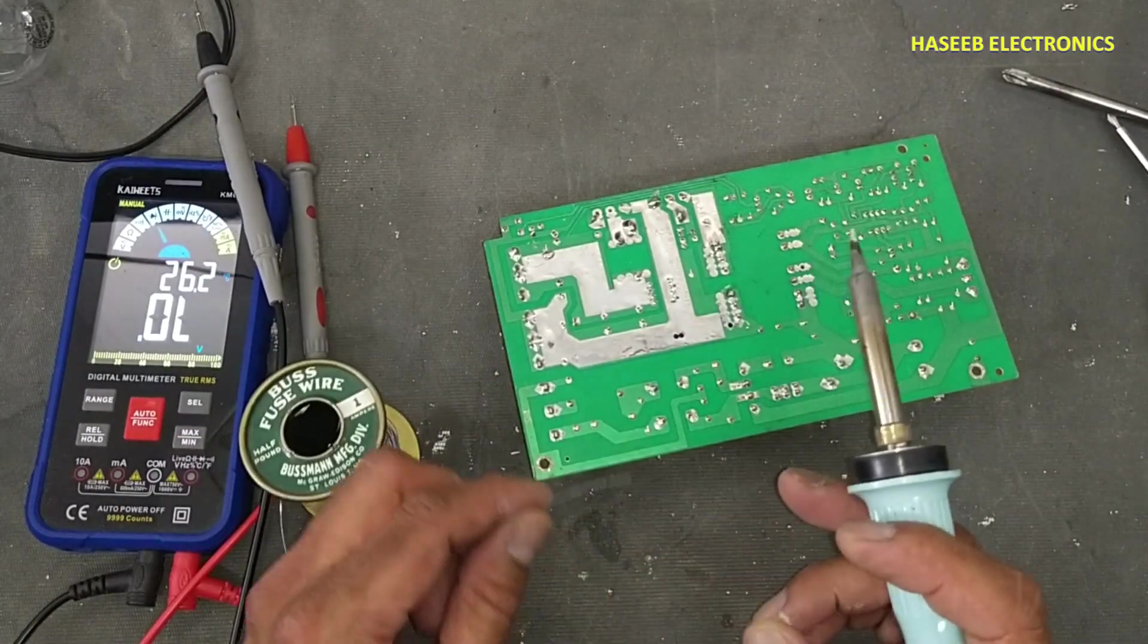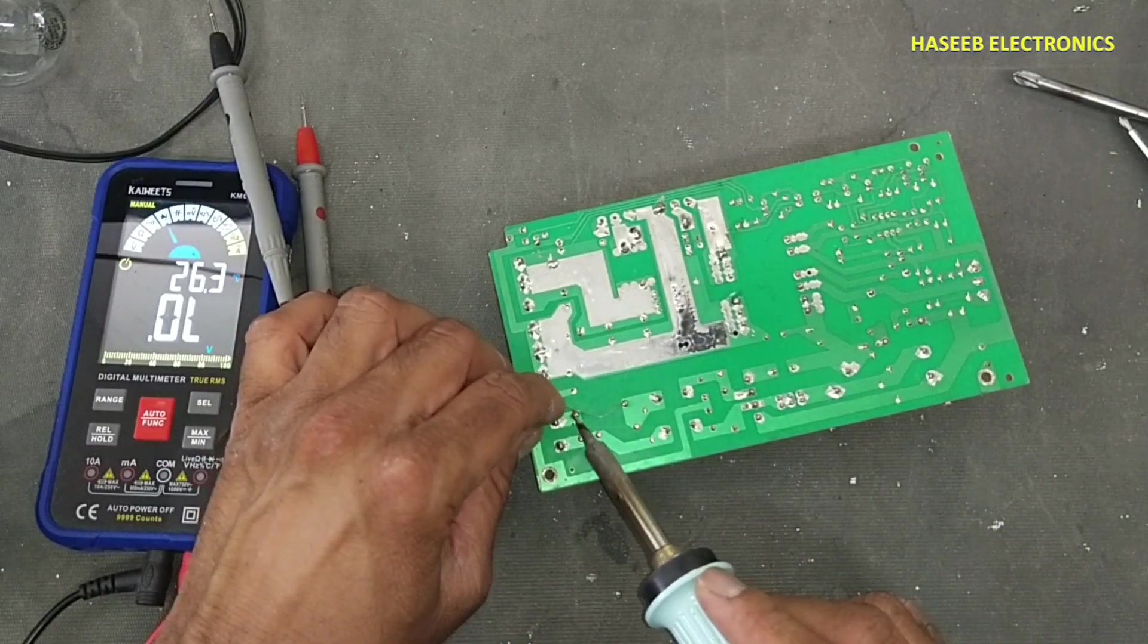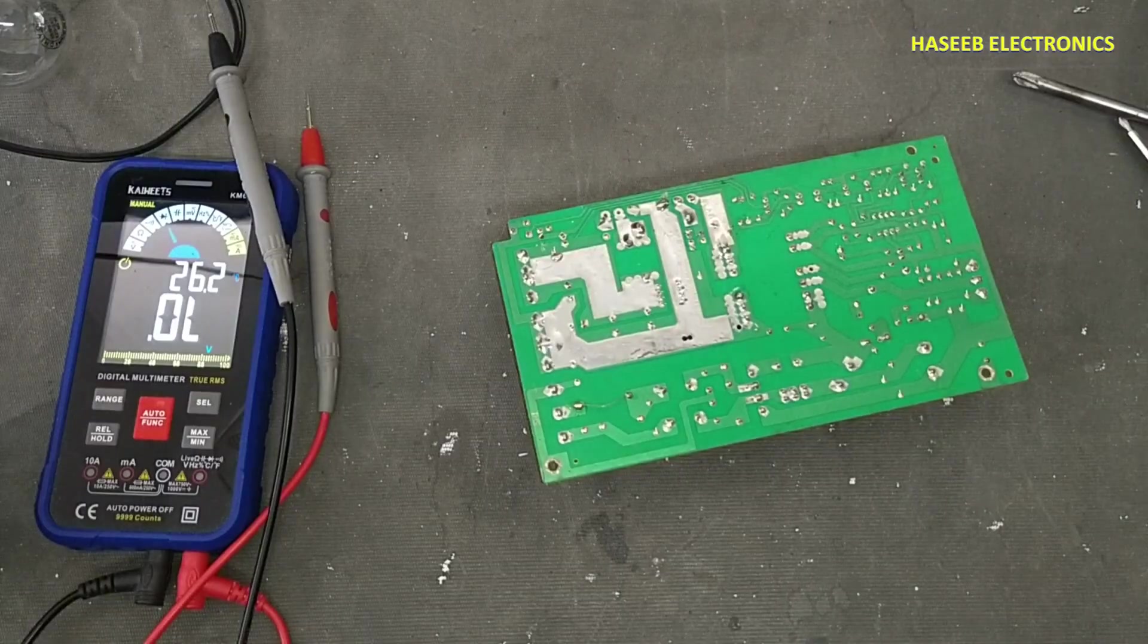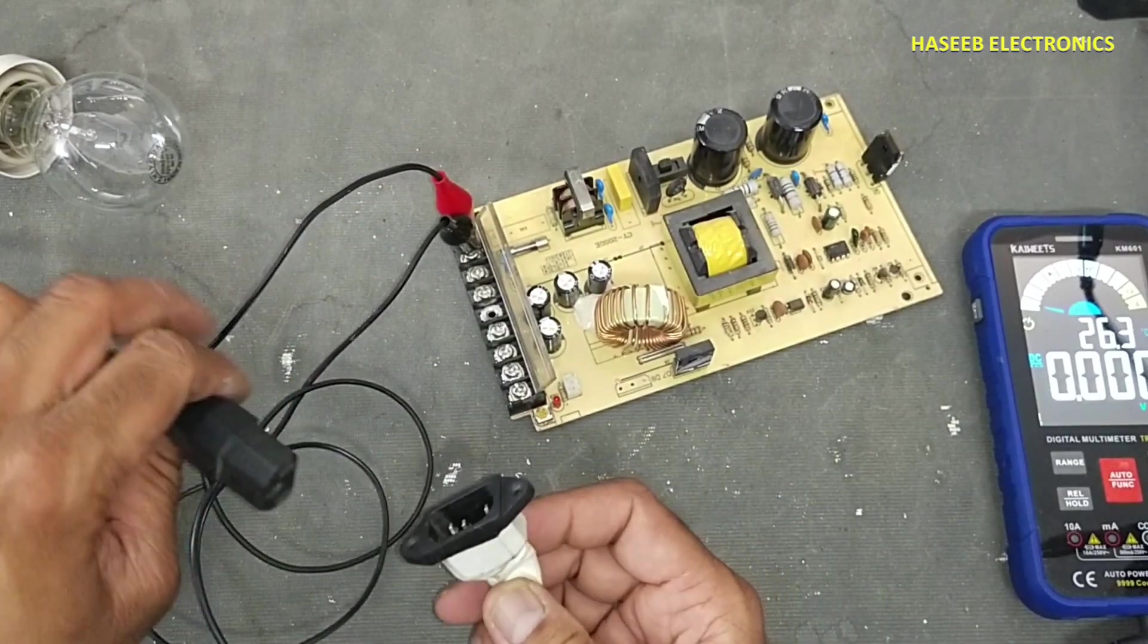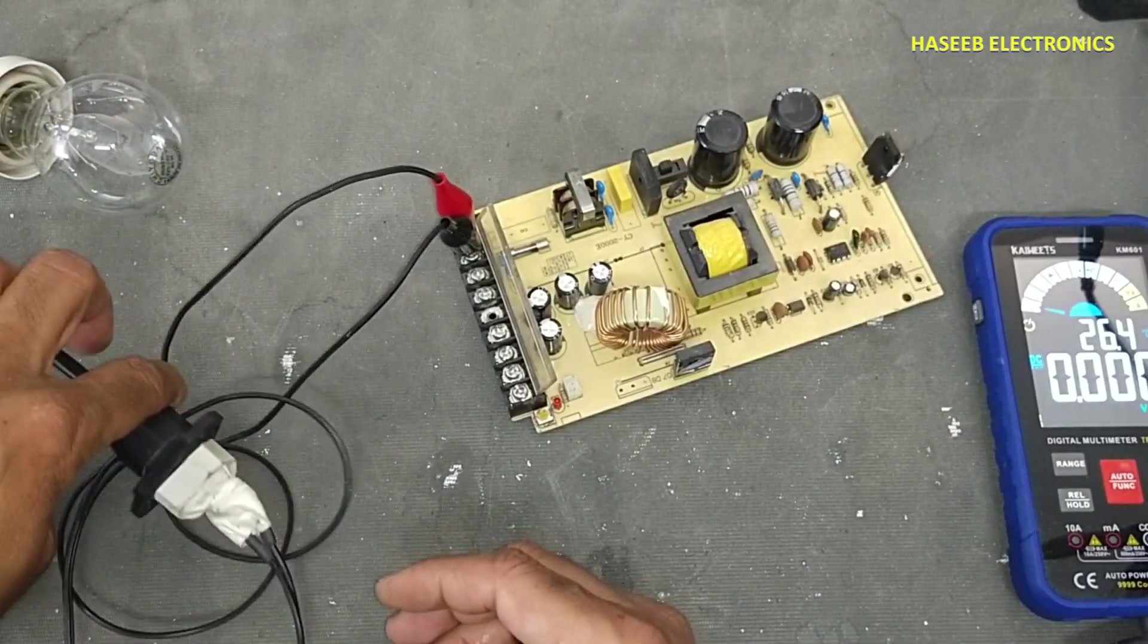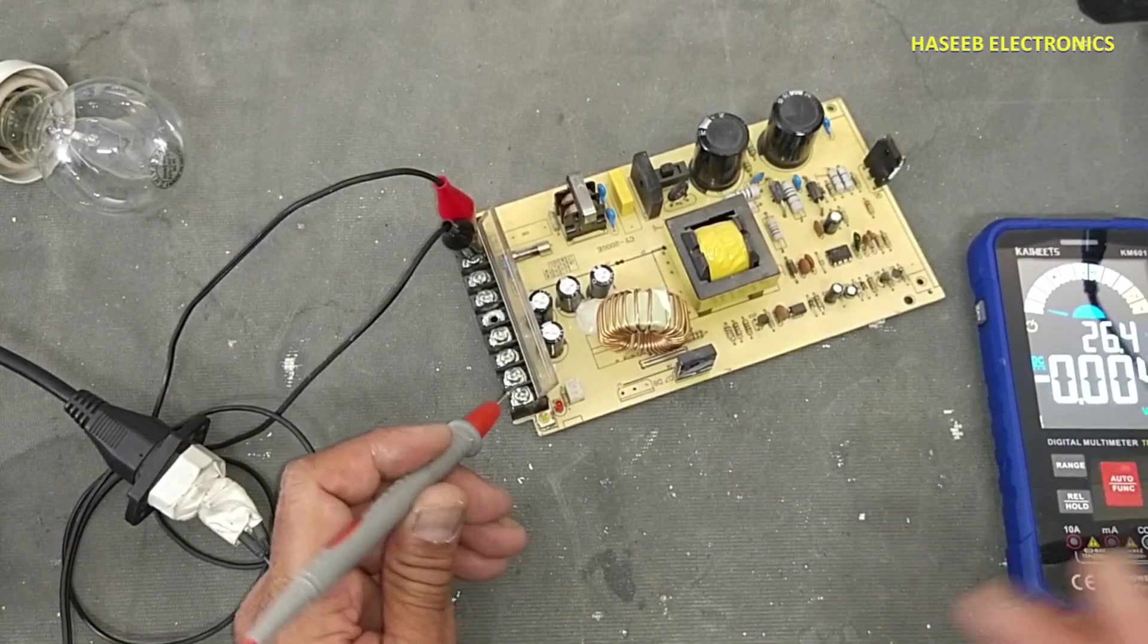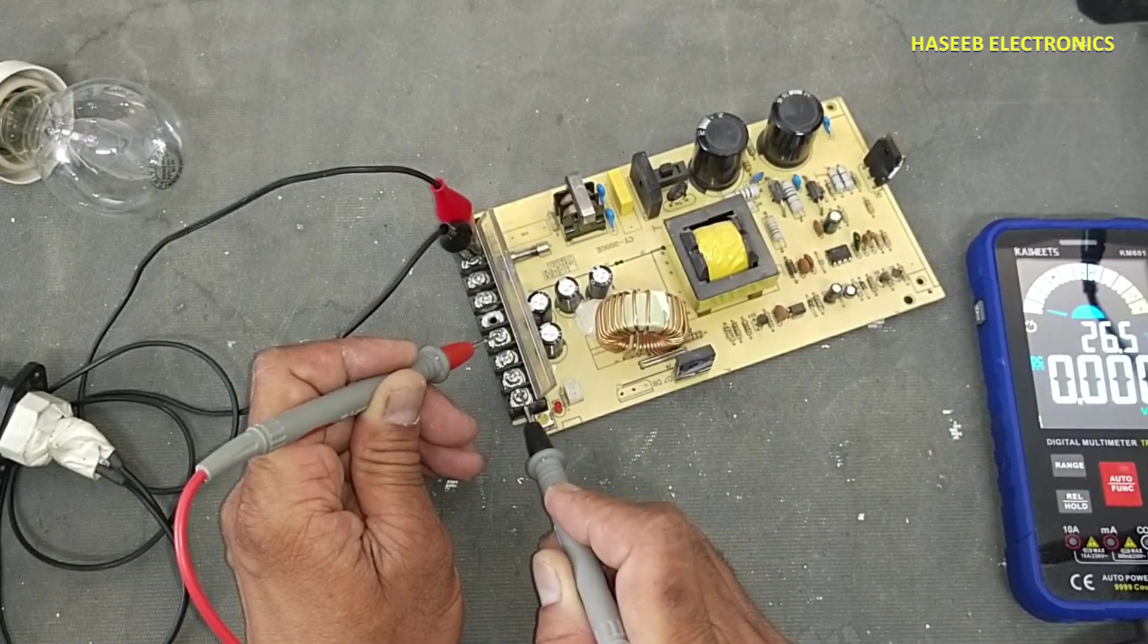So I installed fuse here and now I will apply power and see the condition of the series lamp. Yes, it's turned on but we don't have LED indication here. Let's check output voltage here. No voltage.